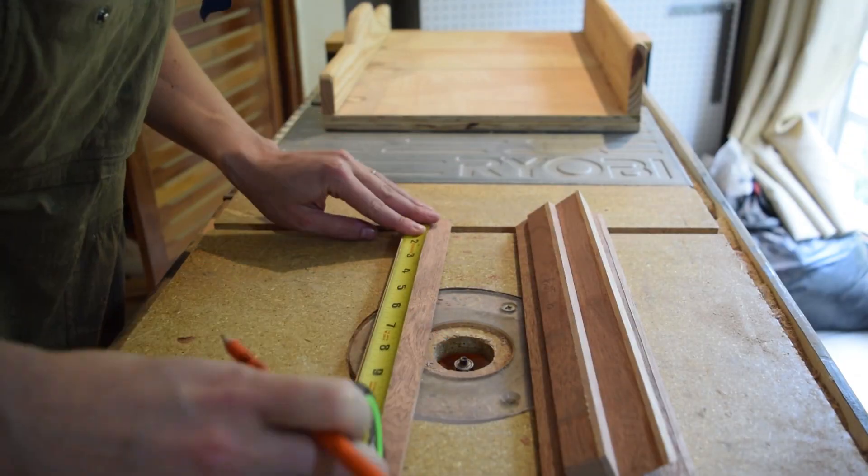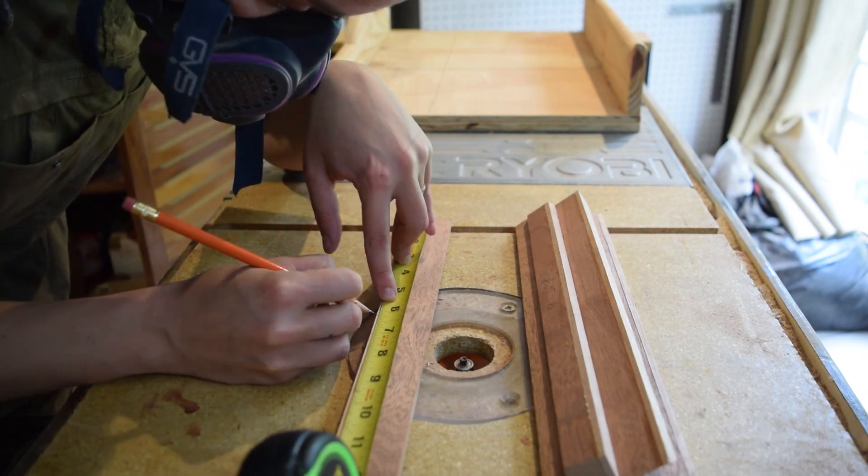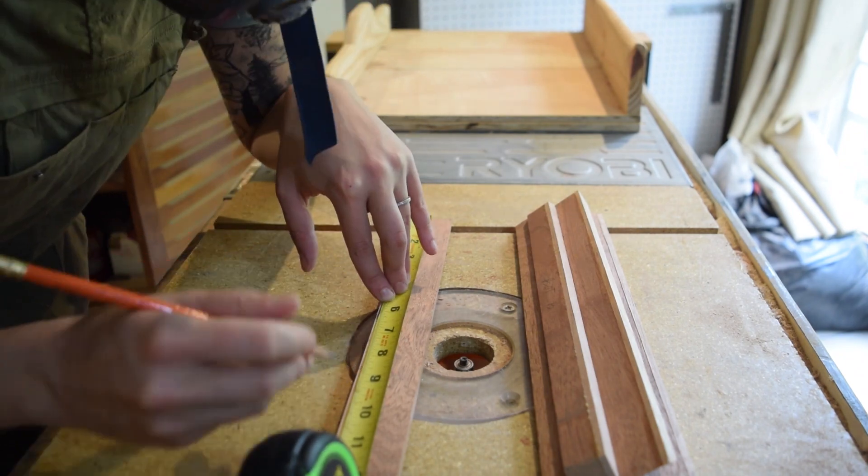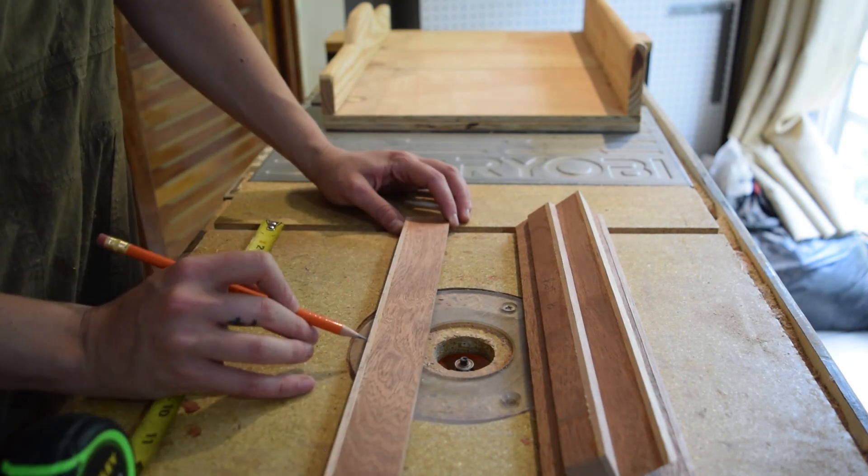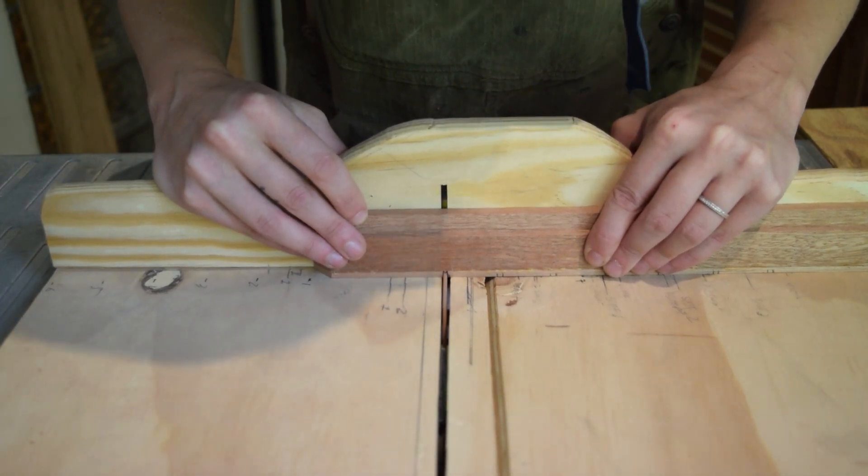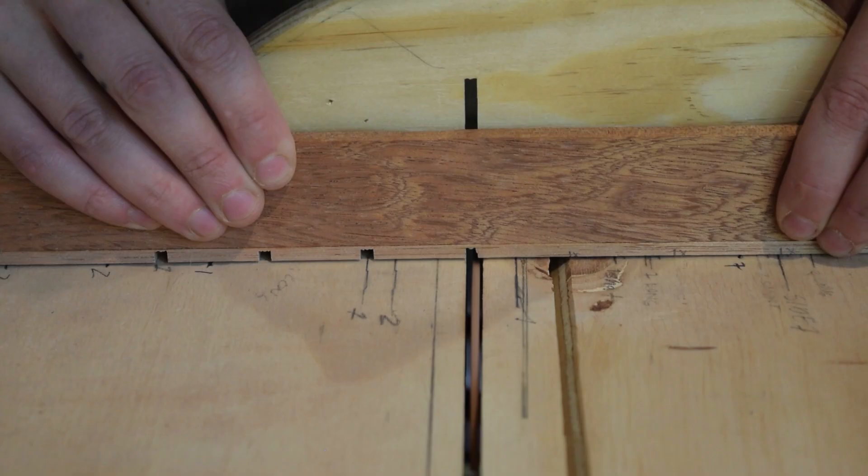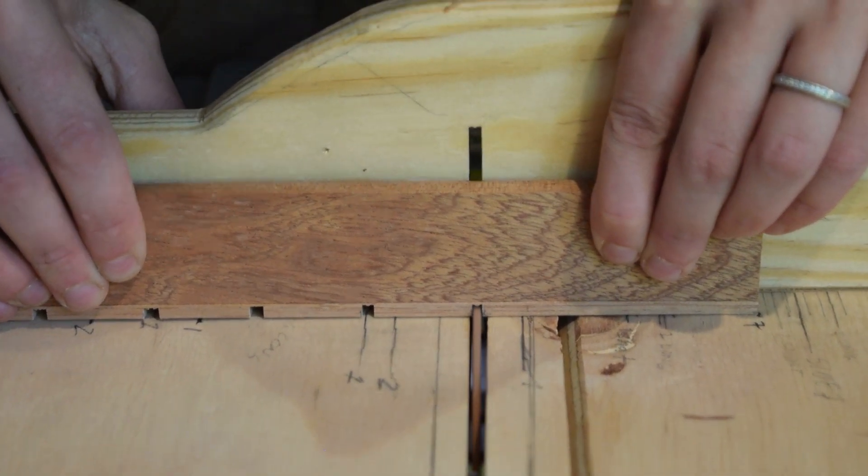With all of the components cut to length, it was time to measure, mark, and cut the slots and lap joints for the lattice. To get seven splines placed, I made marks about 1 and 3-sixteenths of an inch apart, adding an 1/8-inch gap for the actual cut. Then, after setting the right blade height, I carefully cut out the anchor slots on the top, bottom, and side pieces.